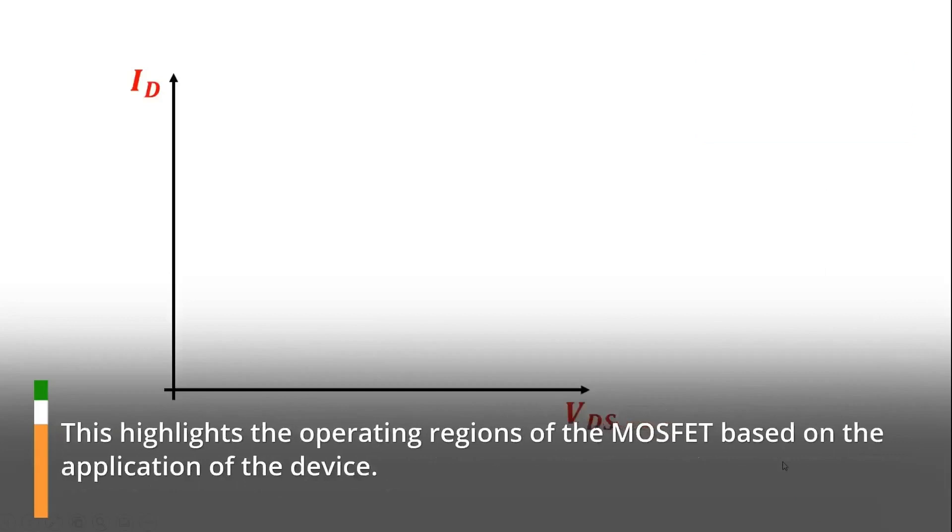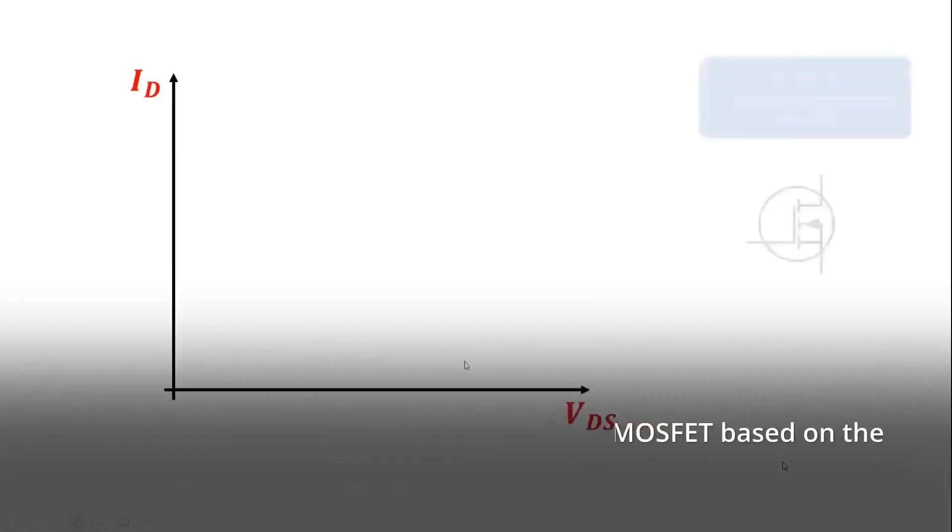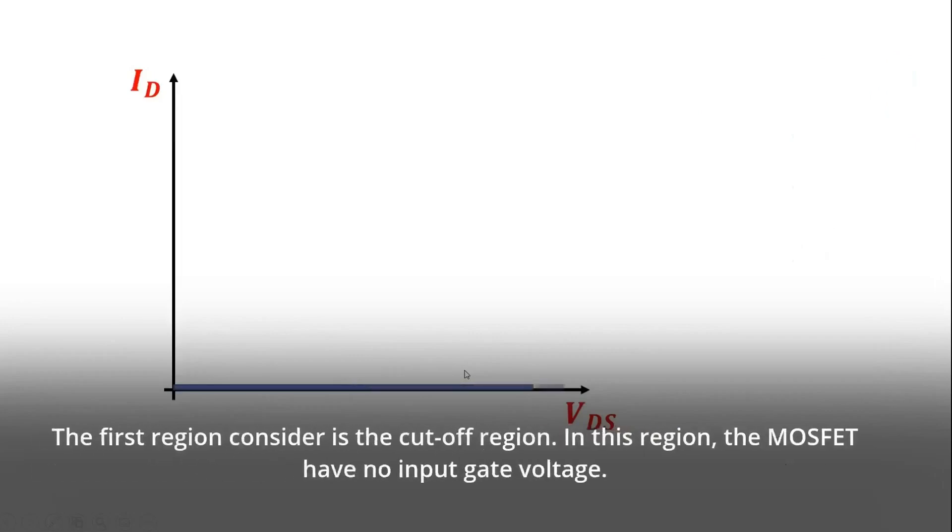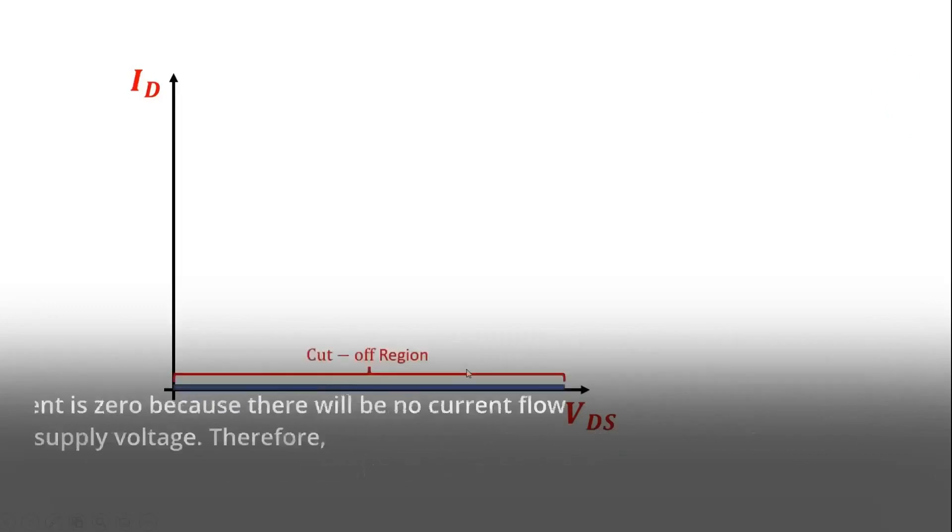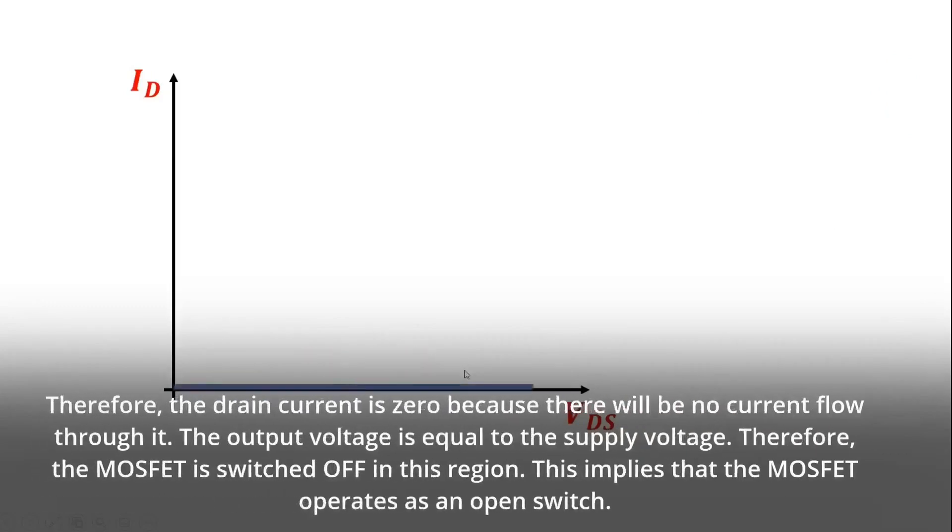This highlights the operating regions of the MOSFET based on the application of the device. The first region considered is the cutoff region. In this region, the MOSFET has no input gate voltage. Therefore, the drain current is zero because there will be no current flow through it.